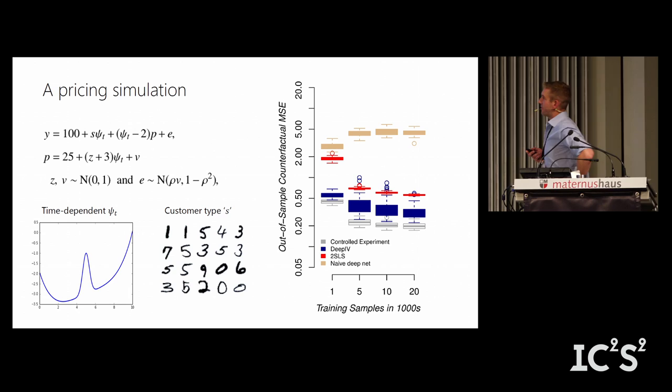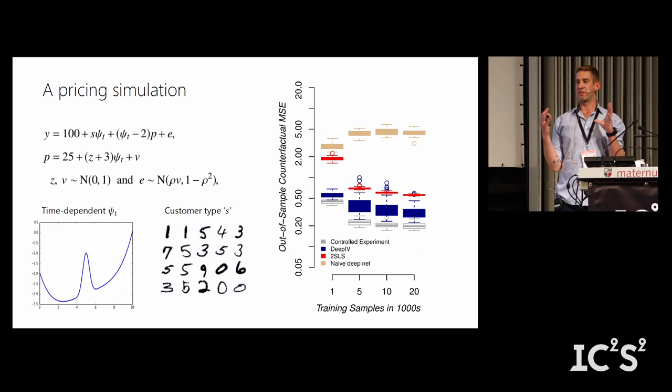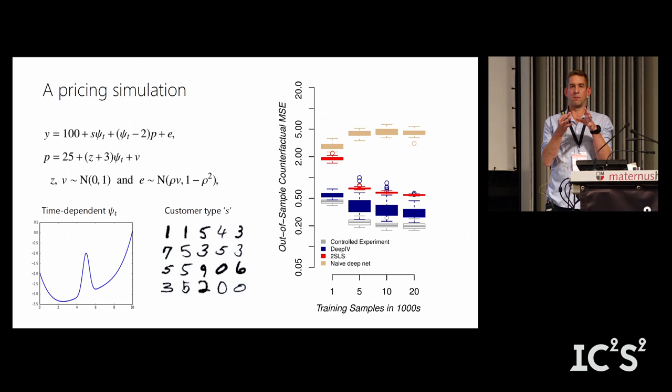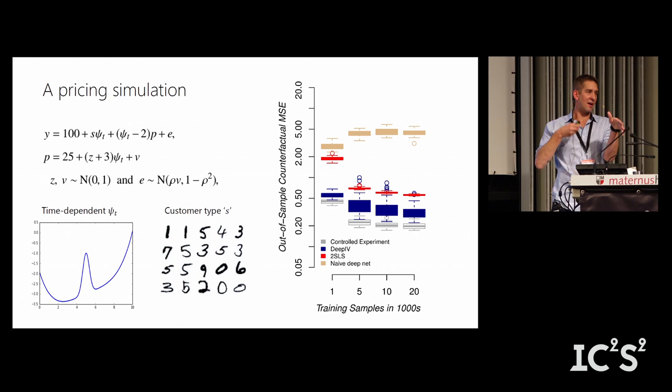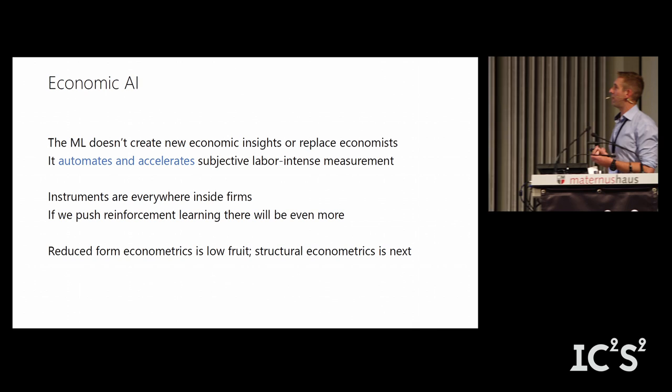We can use deep nets for all sorts of causal inference setups. The most compelling cases are when we have images of products — for example, price sensitivity that depends on the image of a beer label. We can use that image as input to a deep neural net if there's been any sort of upstream randomization. I won't go into the example in detail because I'm out of time.